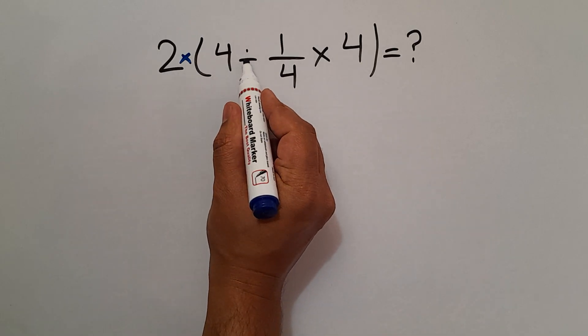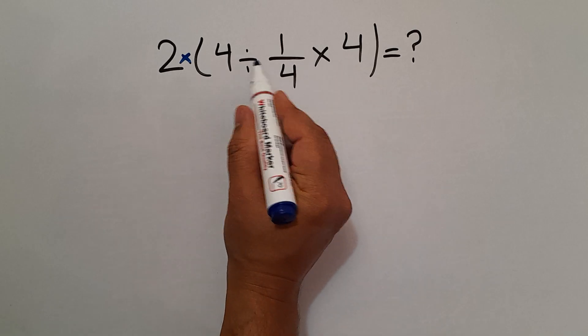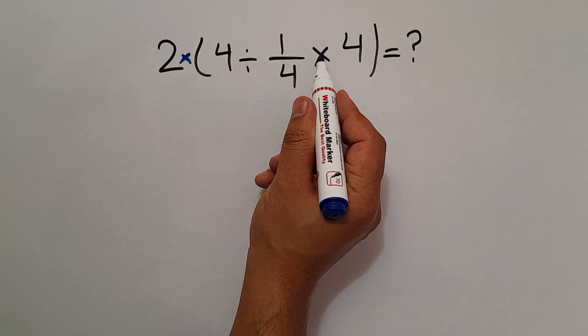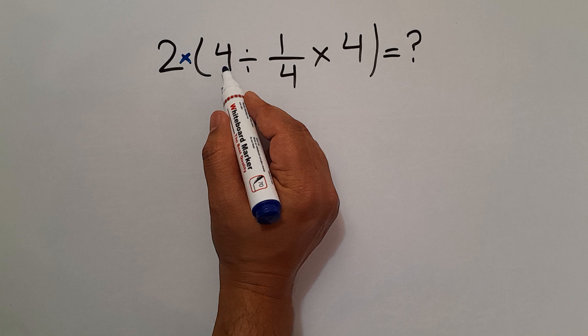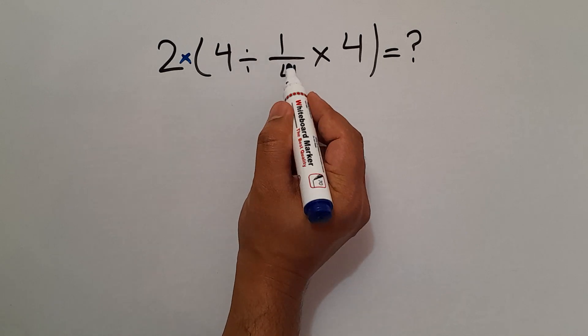4 divided by 1 over 4 times 4. As we know, division and multiplication have equal priority and we have to work from left to right. So first 4 divided by 1 over 4.